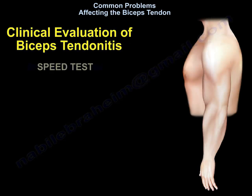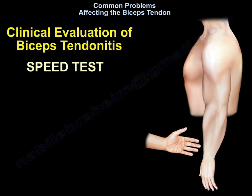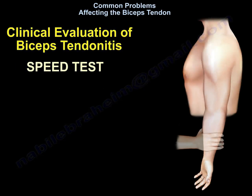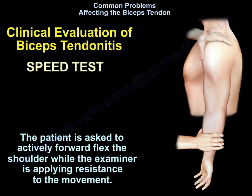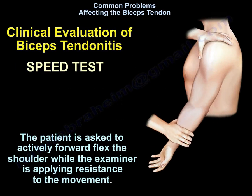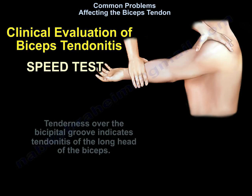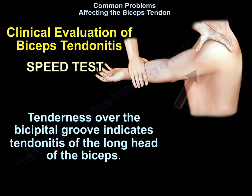Clinical evaluation of biceps tendonitis — the speed test. The arm is supinated and the elbow extended. The patient is asked to actively forward flex the shoulder while the examiner applies resistance to the movement. Tenderness over the bicipital groove indicates tendonitis of the long head of the biceps.